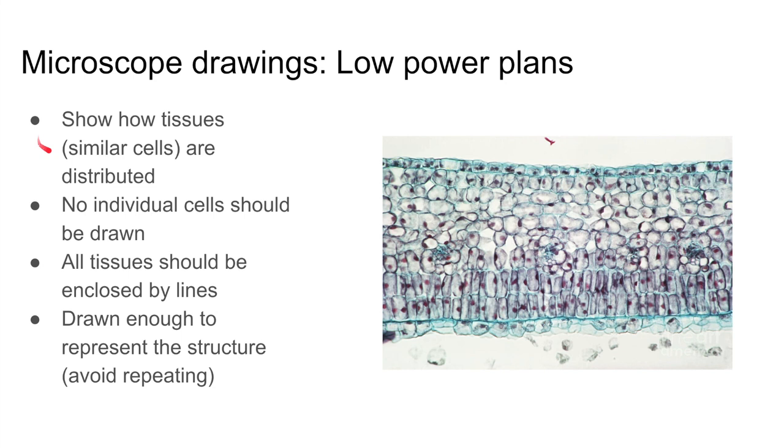Essentially, low power is about showing how tissues are distributed. So in a low-power drawing, you do not need to draw and you should not draw individual cells. You are showing how cells with similar structure and function, how they are grouped, where they are located, how they are distributed in that tissue or organ. So low-power drawings do not have any information about individual cells, only about the location of groups of cells.